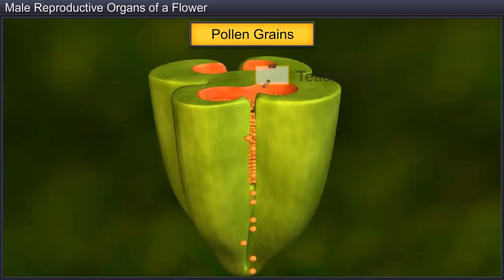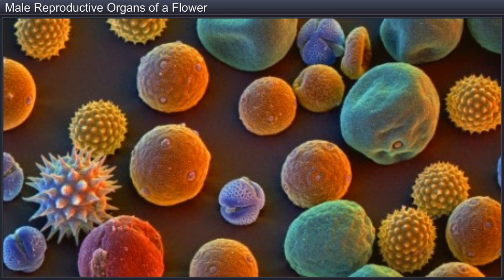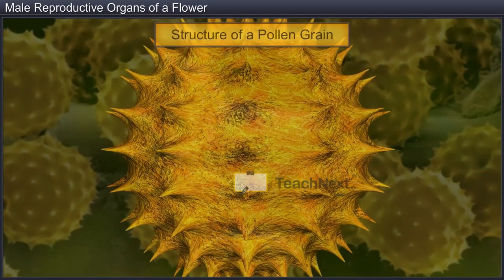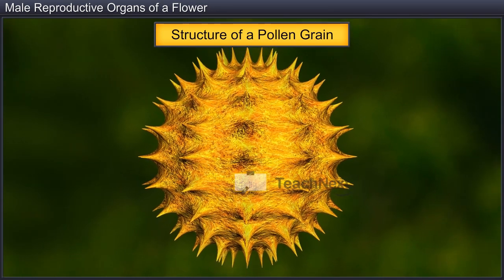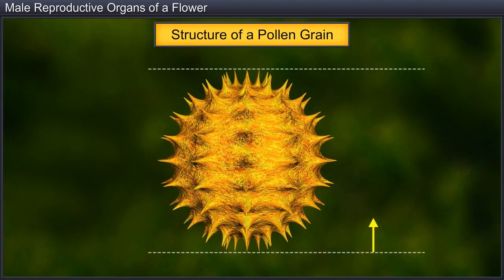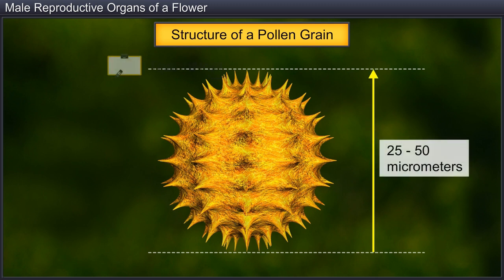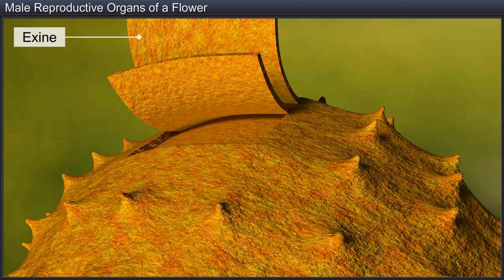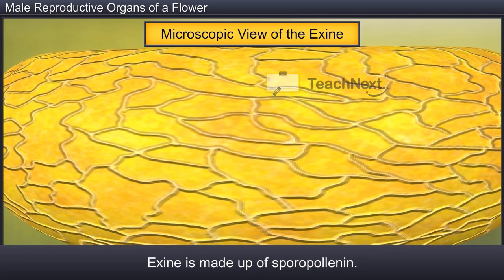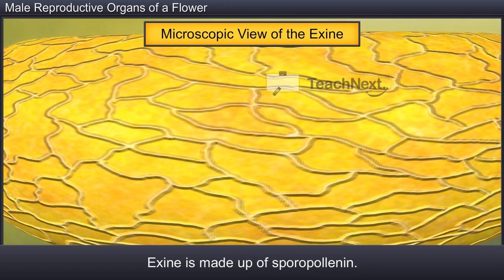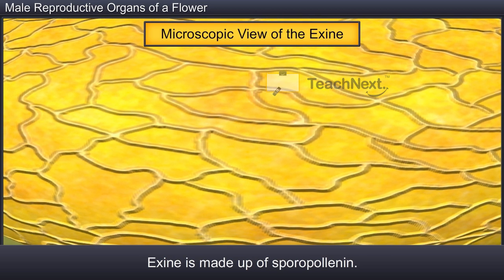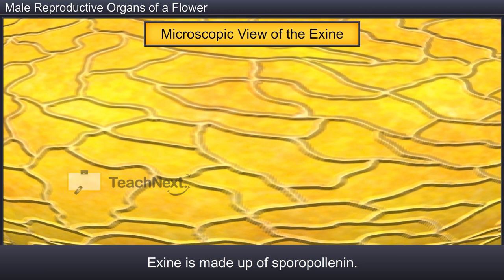Pollen grains, which represent the male gametophyte, come in a wide variety of sizes, shapes and colors. A typical pollen grain is spherical in shape and has a diameter measuring about 25 to 50 micrometers. It is surrounded by two layers of wall: exine and intine.